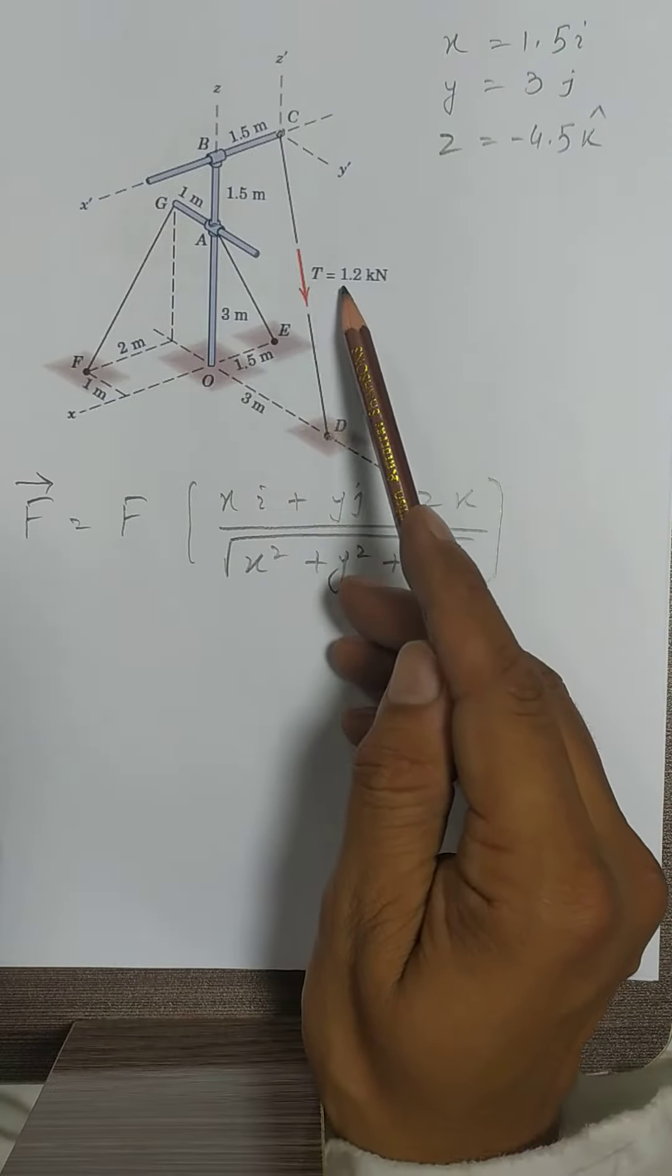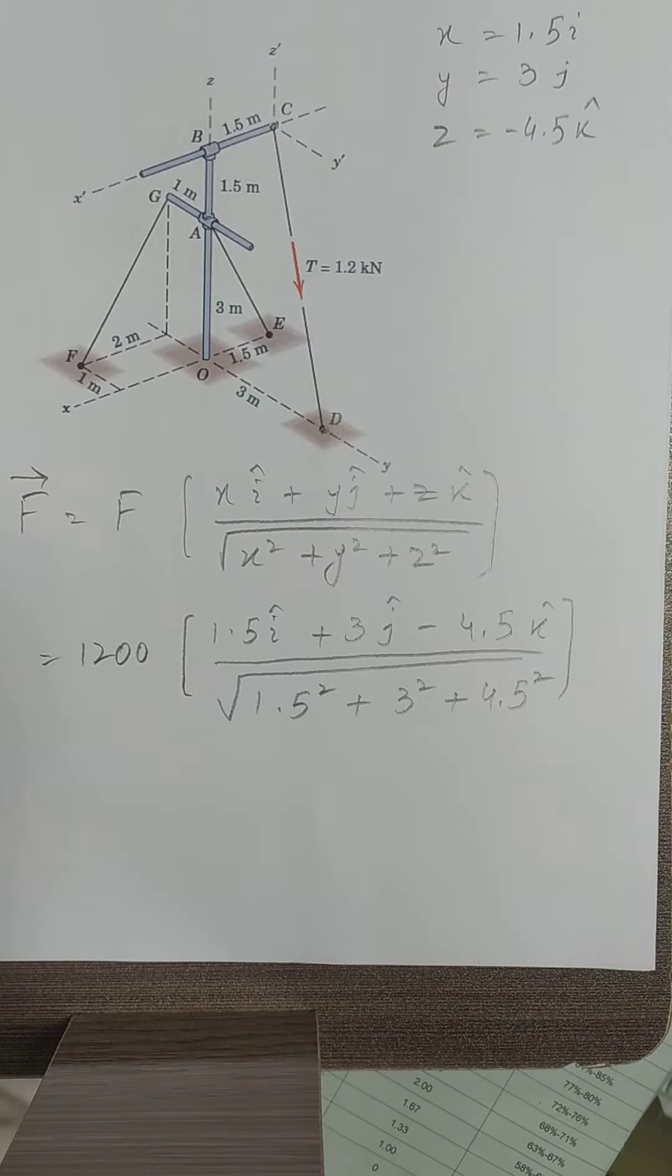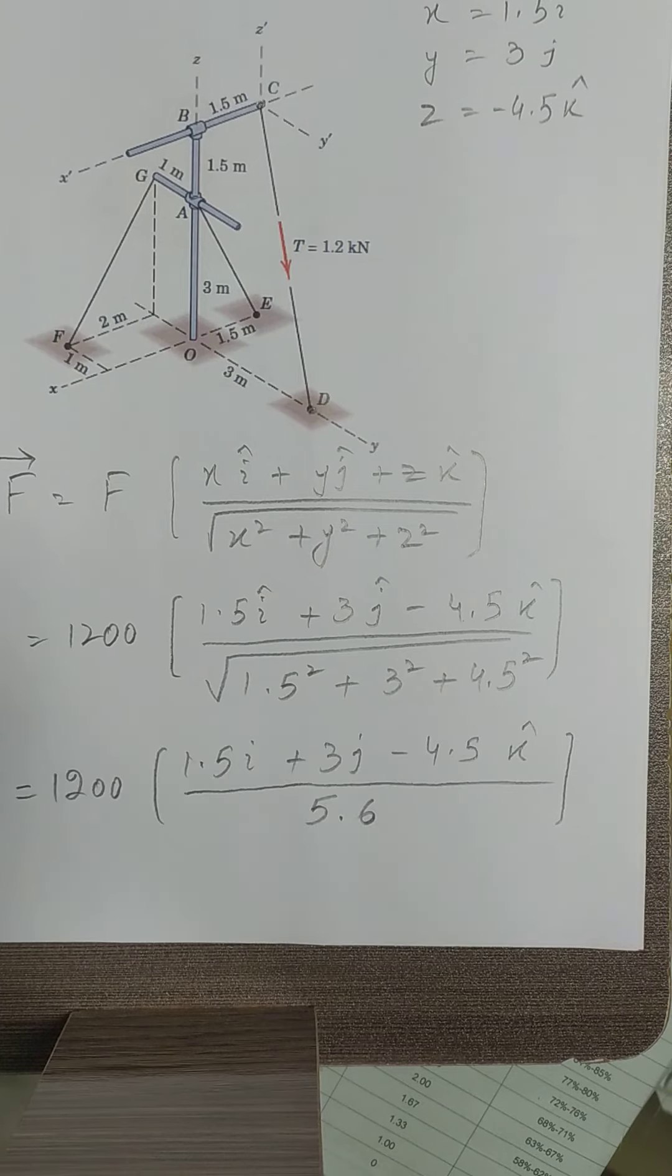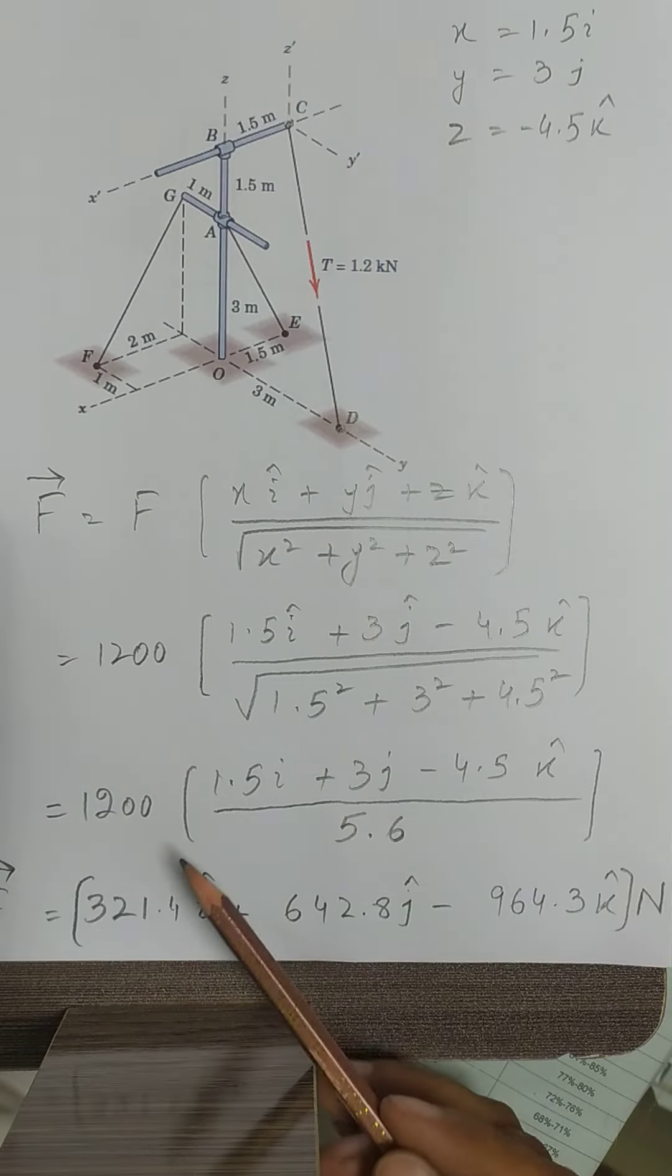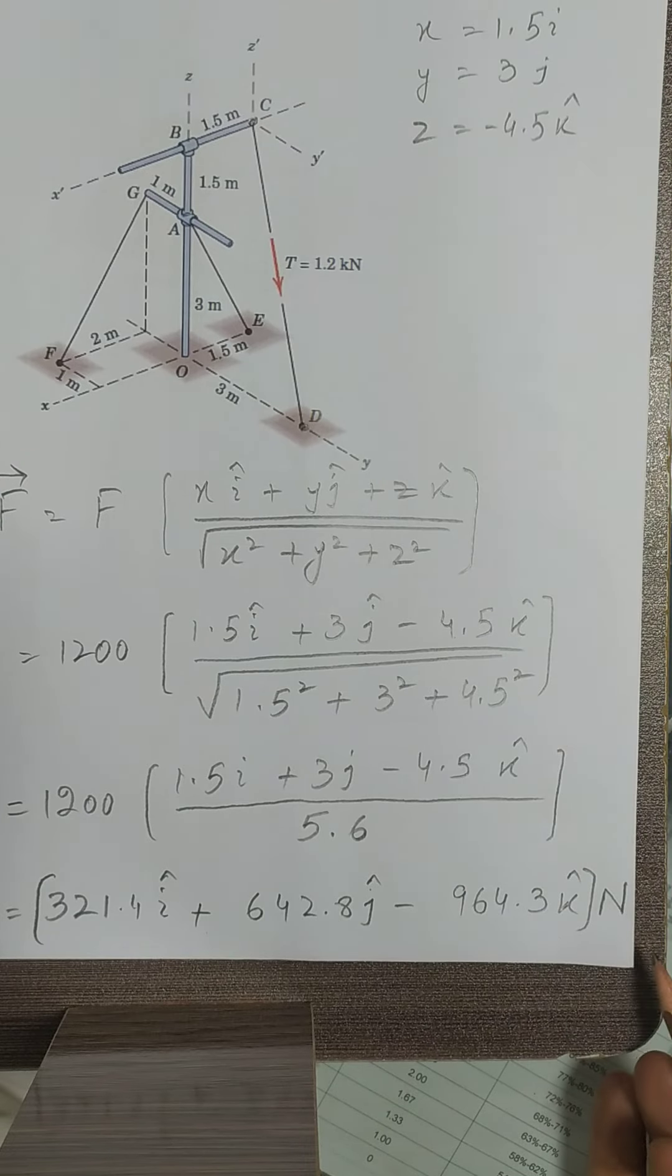So after putting the values, now we will solve it. It's 5.6 after solving it. Now we will get the values of all three components. So these are the three components: this is the x component, this is the y component, and this is the z component of the force. And the units are newton.